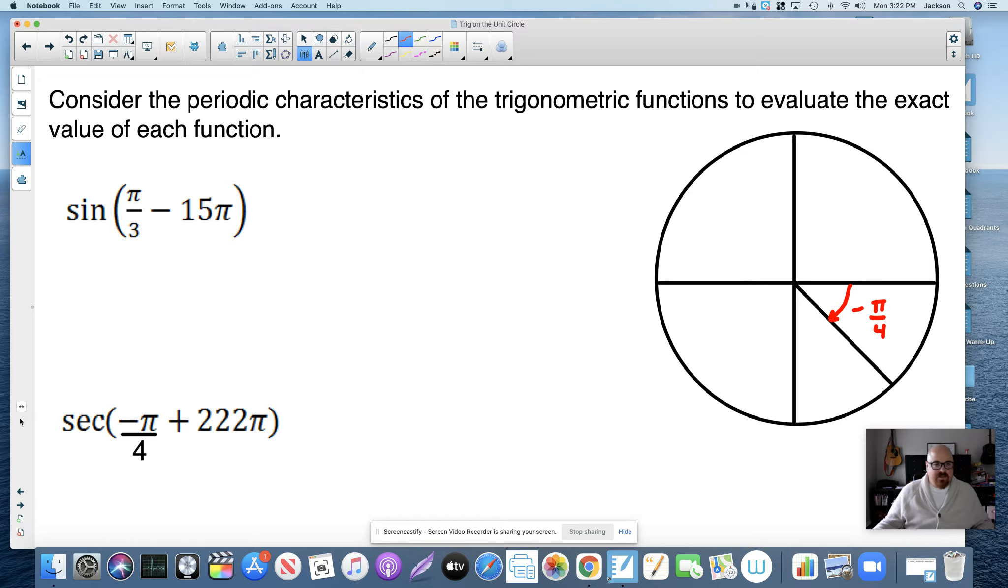Now, they want to know what the secant of that angle is. If you're in my class and you've heard me say this a couple of times at this point, we're not going to do secant, we're going to do cosine. We're going to find the cosine of this angle, and then when we're done, we'll take whatever our output is and flip it over because secant is the reciprocal of cosine.